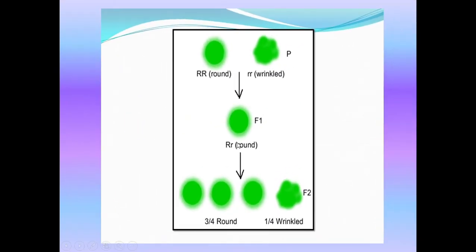For round and wrinkled seeds, round is dominant. Capital R small r is round, and in the F2 generation you get one wrinkled plant which is pure for the wrinkled trait.